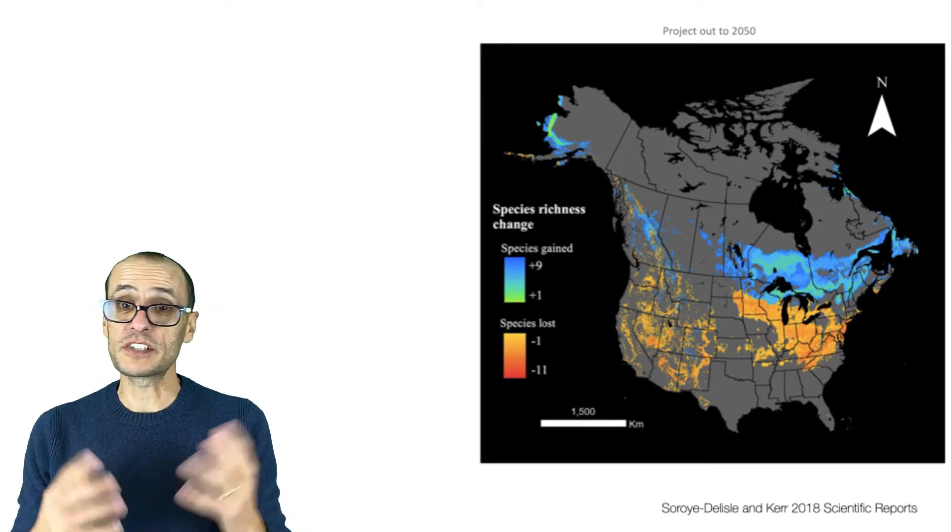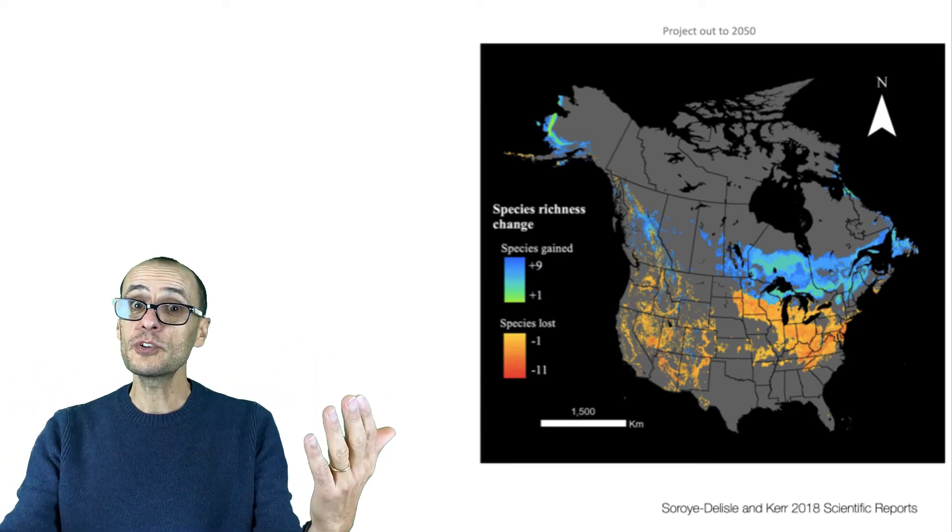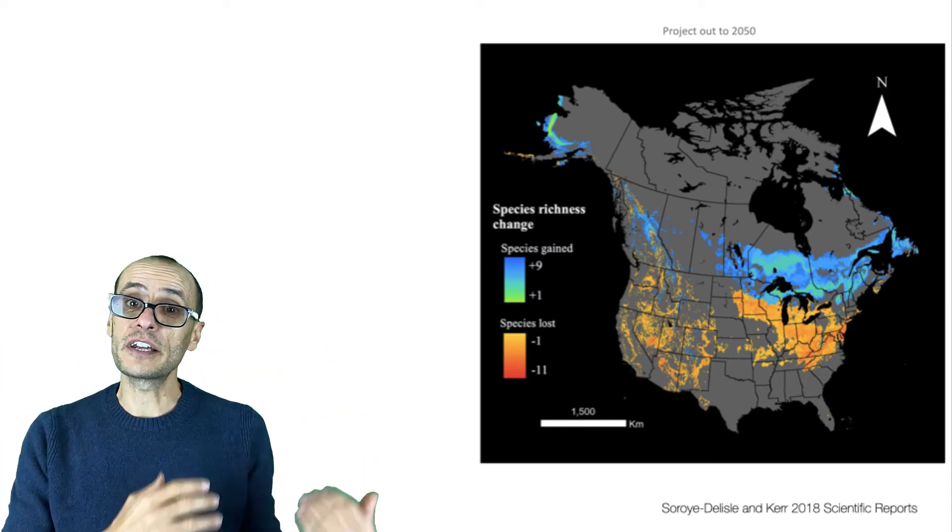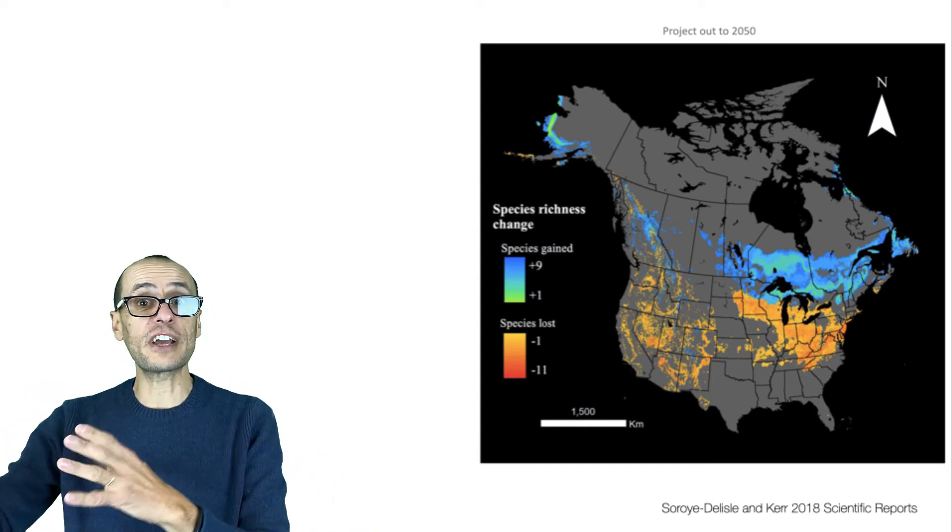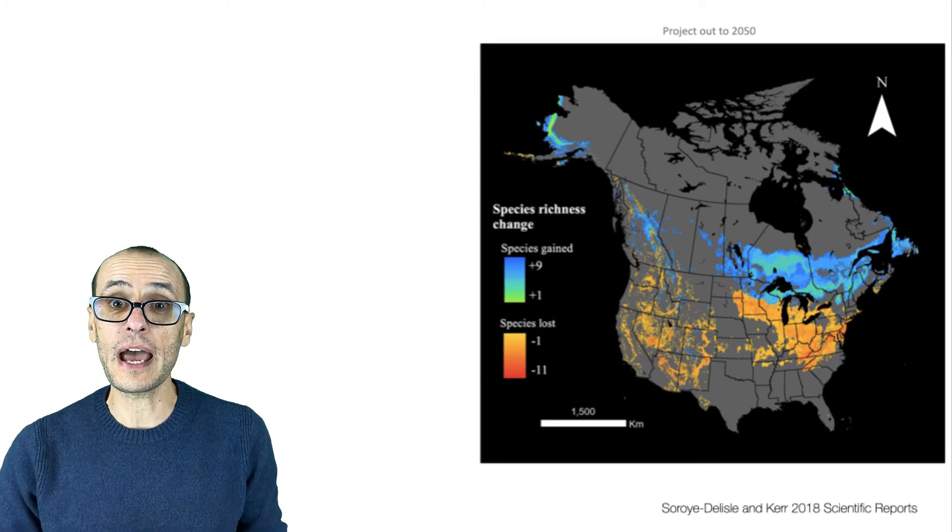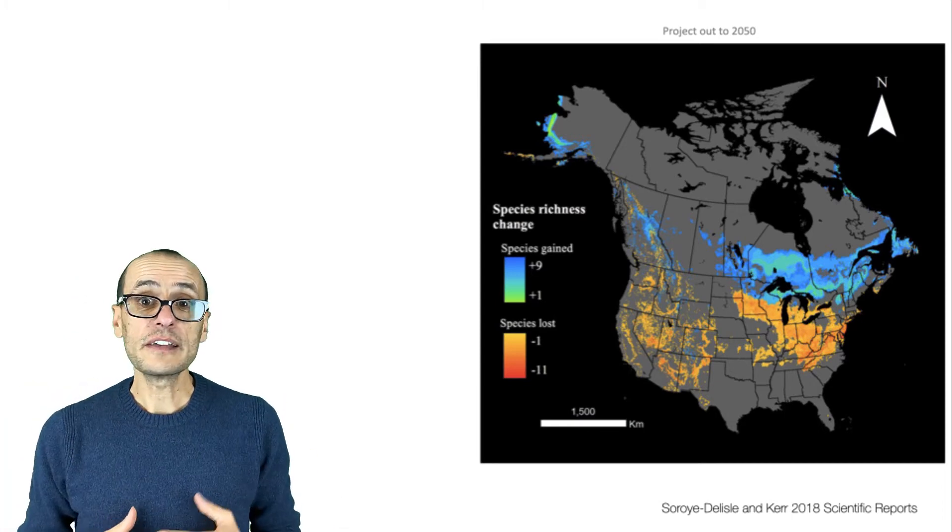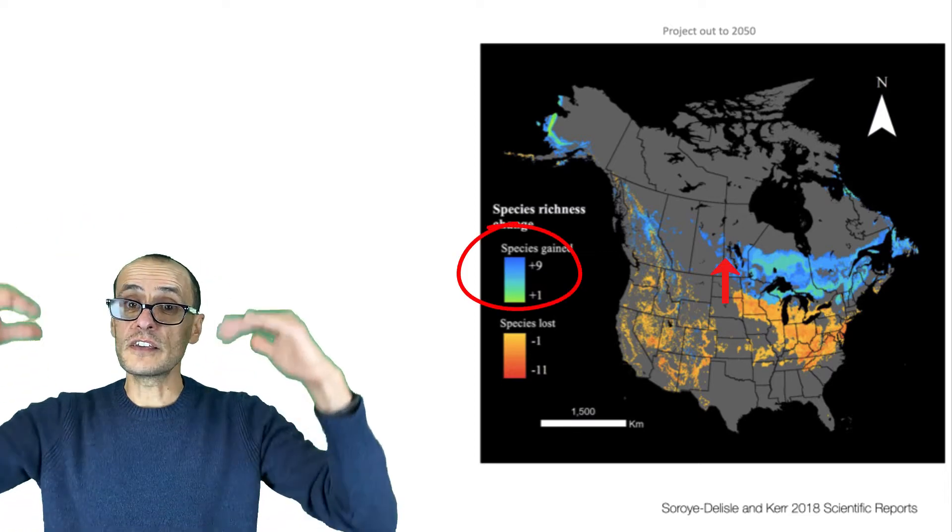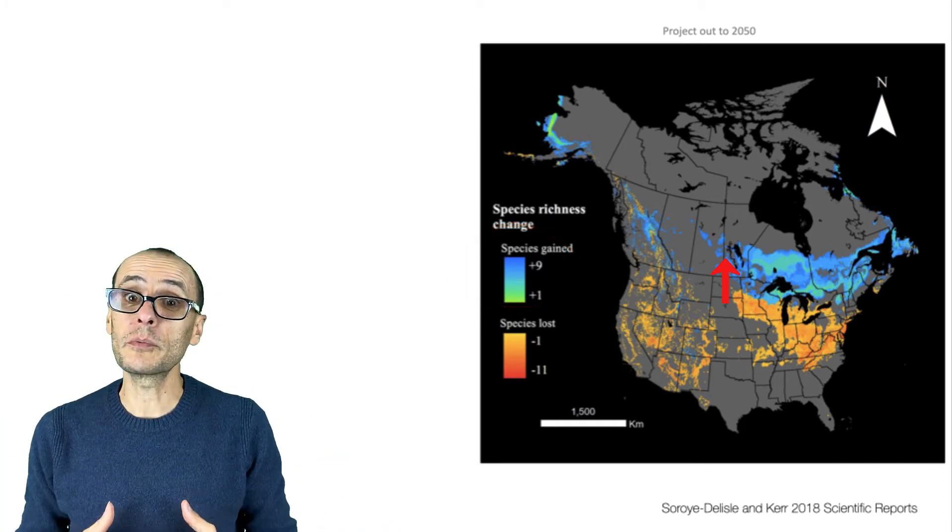You can take this approach one step further, as they did, and actually make some predictions about the species distributions given future climates. So that previous study was about what have we seen so far. This one here is about let's project things out 50 years and let's see what happens. So let's see what we might predict. And what they conclude is that some species will eventually migrate north, and therefore some regions in these more northern latitudes will see an increase in the number of species, number of bumblebee species.